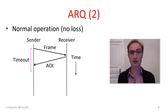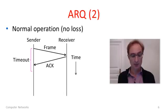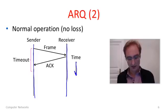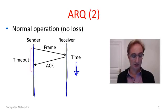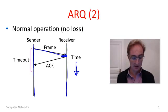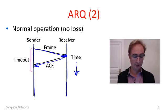Here we can see how ARQ works. This is a time sequence diagram where the sender and receiver are shown as vertical lines and time runs down the page. In the normal operation case with no frame loss, the sender sends a frame to the receiver — the arrow slopes downward because sending takes time. The receiver receives the frame and sends an ACK back. This ACK is received before the timeout period passes, so the sender doesn't need to resend. The frame has been transferred and no retransmissions are needed.